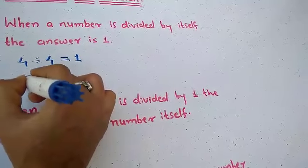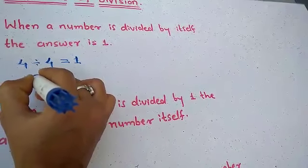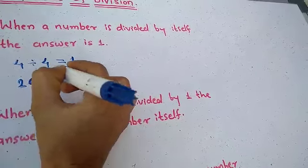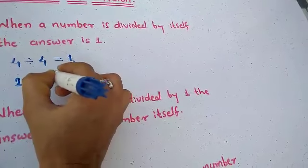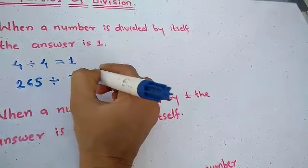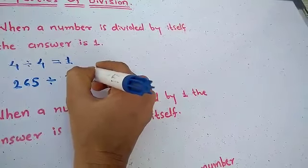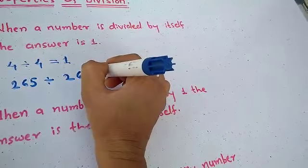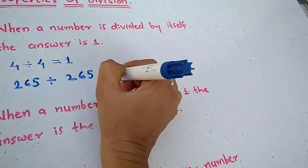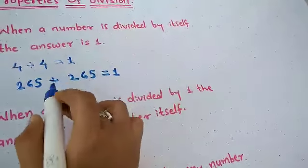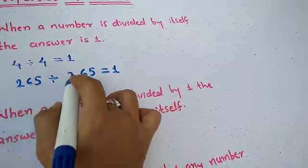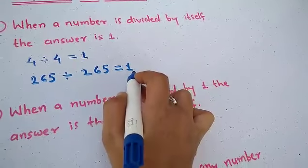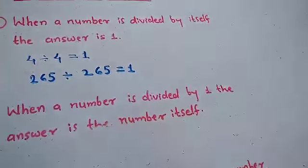Now next example: 265 divided by 265 is equal to 1. So a number divided by itself, the answer is always 1.